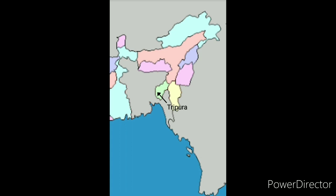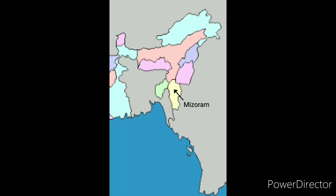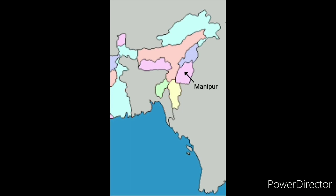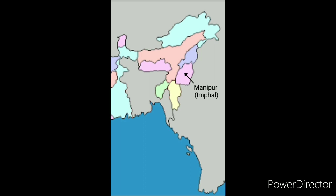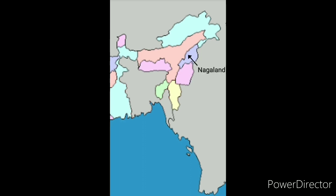We have Tripura and its capital is Agartala. Next to it is Mizoram and its capital is Aizawl. Above Mizoram is Manipur and its capital is Imphal.